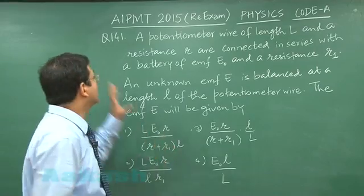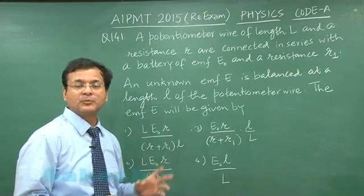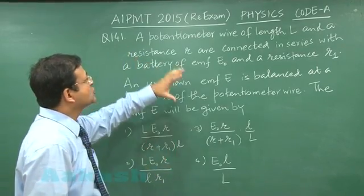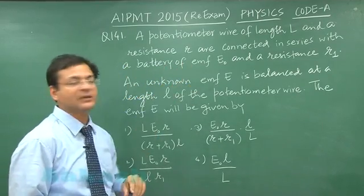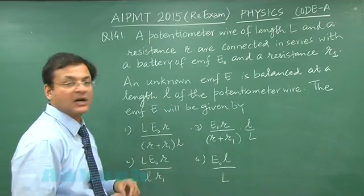Now in the next question, that is question 141, which is based on potentiometer wire. It says that a potentiometer wire of length L and a resistance R are connected in series with a battery of EMF E0 and a resistance R1.